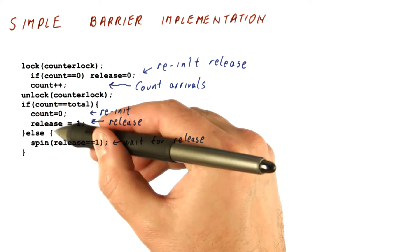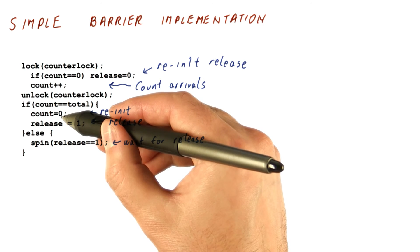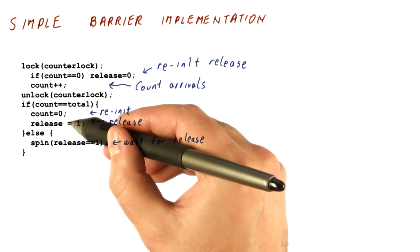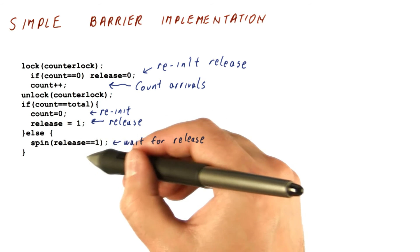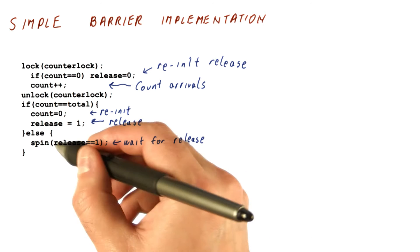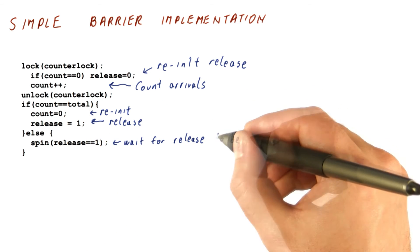One or more threads that arrive towards the end are going to do this, which will reset the count so that next time we enter, we see count zero. And release is set to one, which ensures that those threads that did end up here are going to see release as one. Note that the meaning of the spin release equals one is actually that we wait for release to be one.